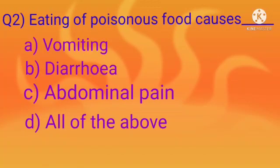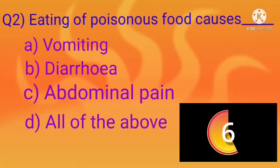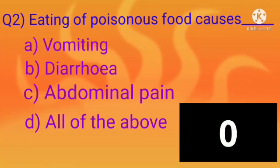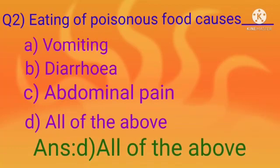Question 2: Eating of poisonous food causes — A. Vomiting, B. Diarrhea, C. Abdominal pain, D. All of the above. You have to answer in 10 seconds.